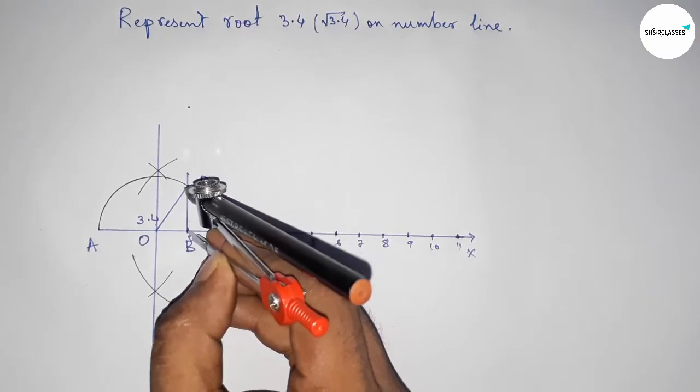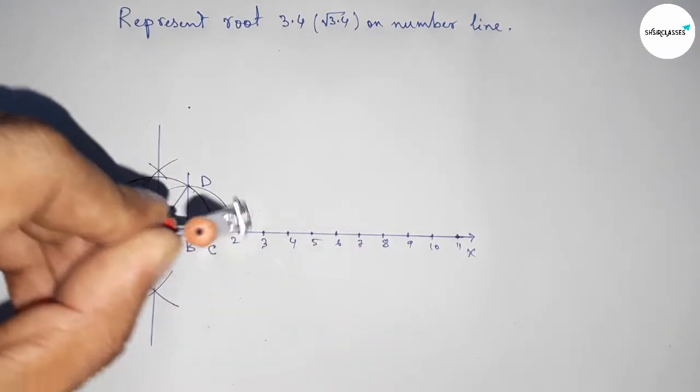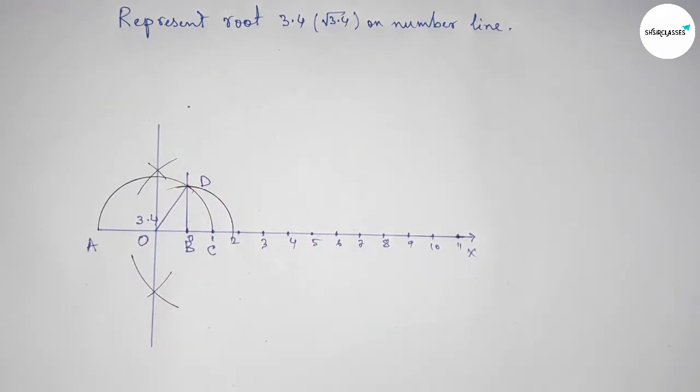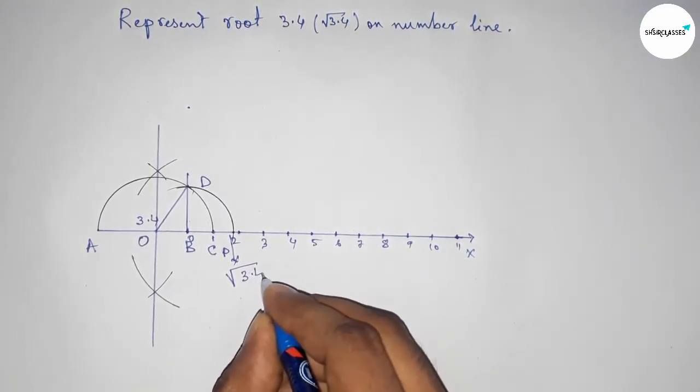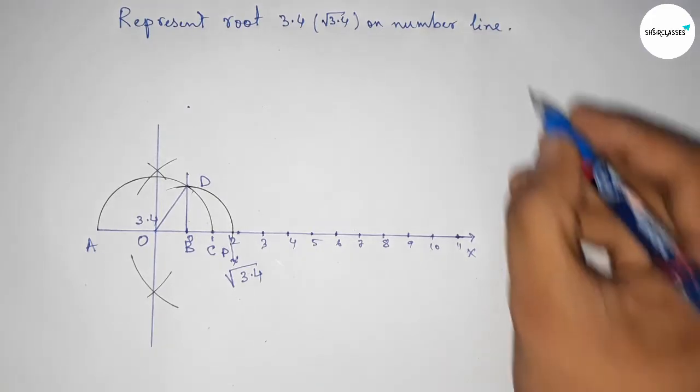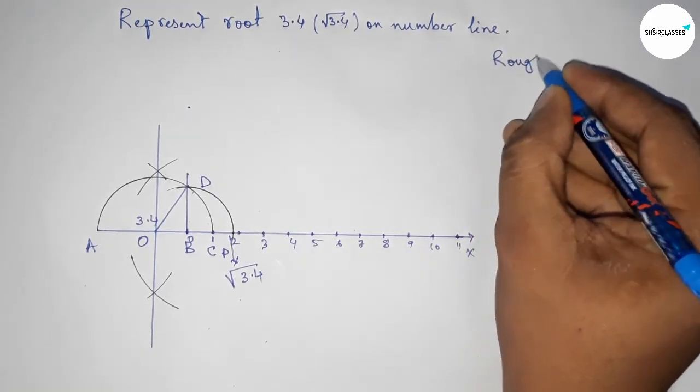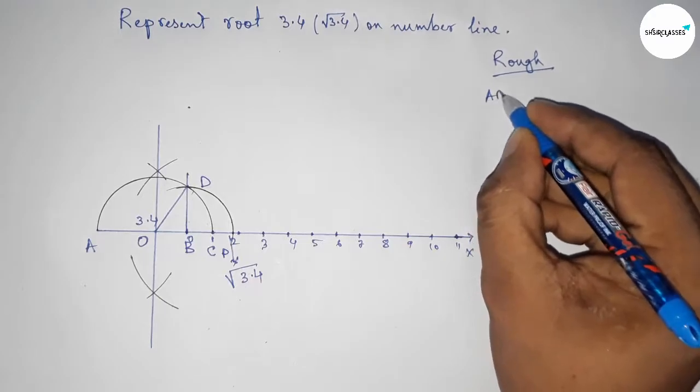Next, take the distance BD with the compass and draw an arc which meets the number line at point P. This is the representation of root 3.4 on the number line. Now let's discuss the calculation of root 3.4.